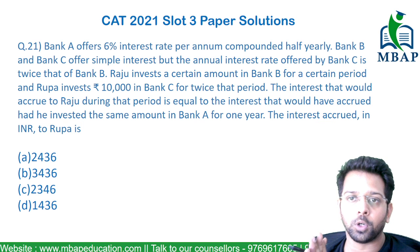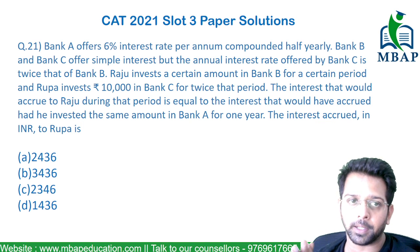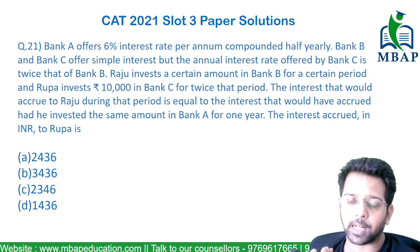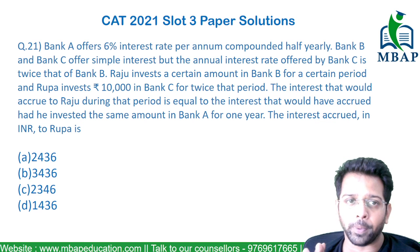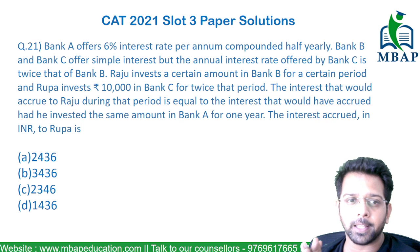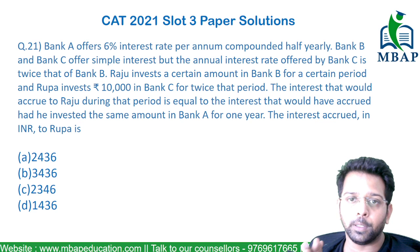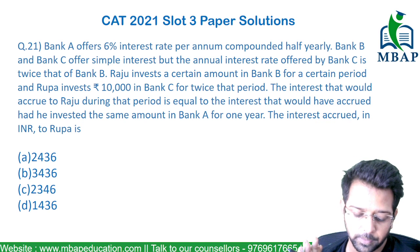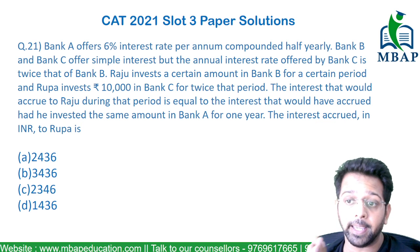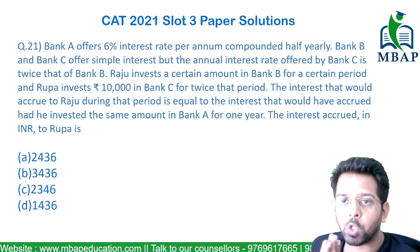Raju invests a certain amount in Bank B for a certain period, and Rupa invests 10,000 in Bank C for twice that period. The interest that would accrue to Raju during that period is equal to the interest that it would have been had he invested the same amount in Bank A for the same period.